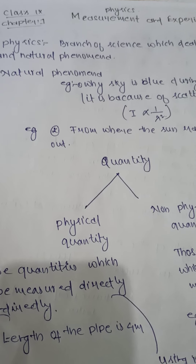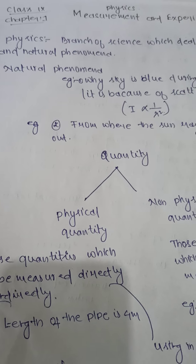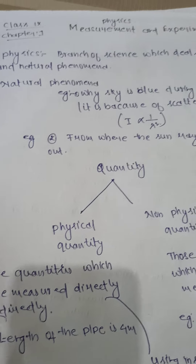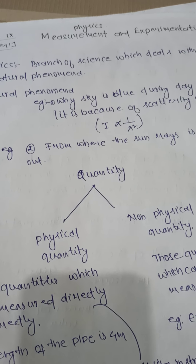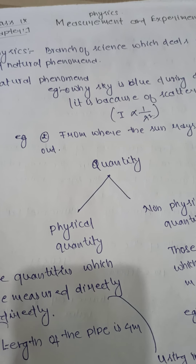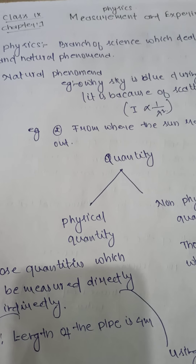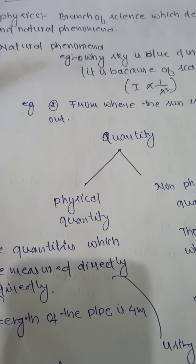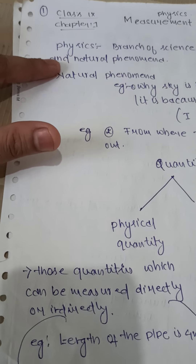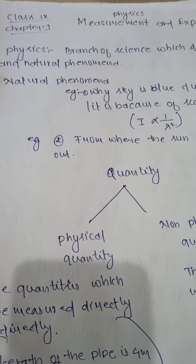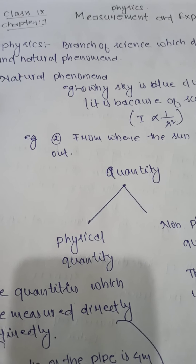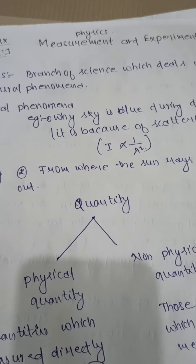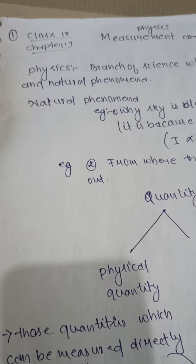Hi students, from today onwards we are going to start the first chapter of class 9, that is Measurement and Experimentation. To understand how this idea of measurement and experimentation comes about, let's start from the topic of physics. Physics is a branch of science — we already know that — but in physics we are mainly studying and dealing with nature and natural phenomena.